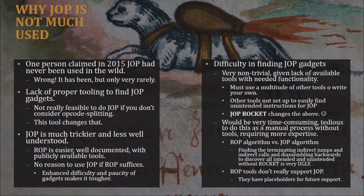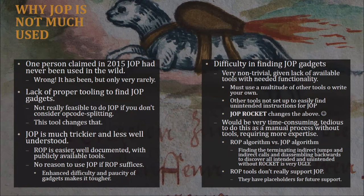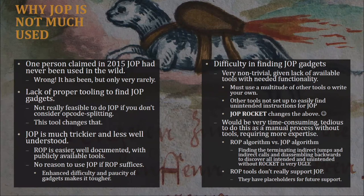Secondly, if you don't have a dedicated tool it can make it difficult or even impossible to find enough gadgets, and the reason for that is opcode splitting. Our ROP tools — MONA and so on — will do the opcode splitting, but if you try to use general purpose reverse engineering tools it's not going to readily allow you to do that. It would become a manual process that could be tedious and time consuming, just like it would be if you tried to do ROP without a tool such as MONA.